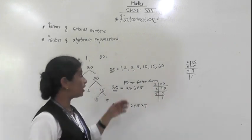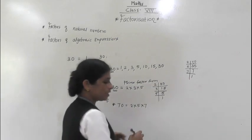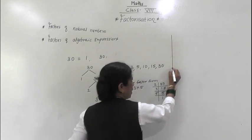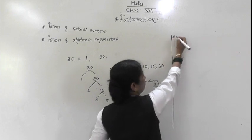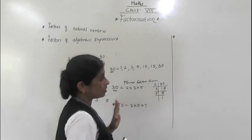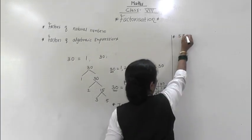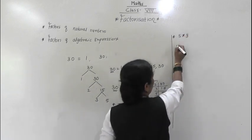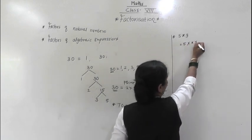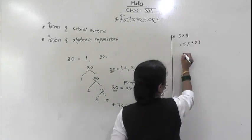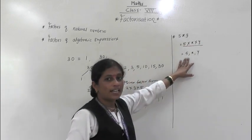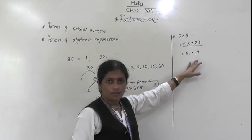So everyone knows about the factors of any natural number. Similarly, we will see what are the factors of algebraic expressions — which we have learned in class 7. So for example, take the algebraic expression 5xy. What are the factors of 5xy? 5 is one factor, multiplied by x, multiplied by y. So the factors of 5xy are 5, x, and y — this is the product form.